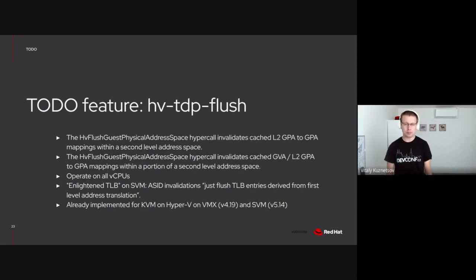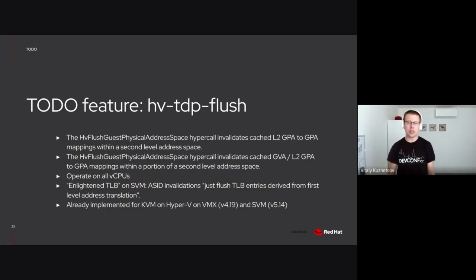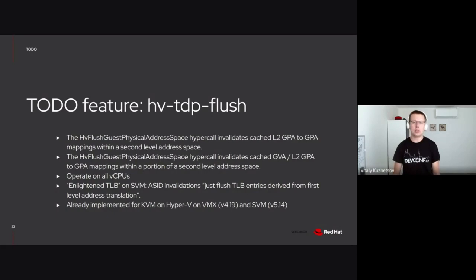TDP flush. There are some hypercalls which allow for flushing mappings derived from the second level of translation — EPT on Intel and NPT on AMD. We already support these hypercalls for KVM on Hyper-V, but we haven't implemented them for Hyper-V on KVM yet. The performance advantage comes from the fact that it's only the hypervisor who knows whether the target vCPU is currently running or not — whether it requires an immediate action to flush its buffer or whether the action can be deferred.